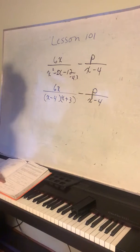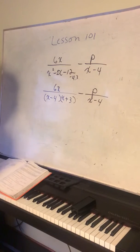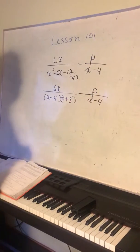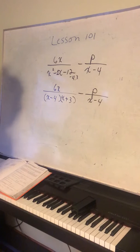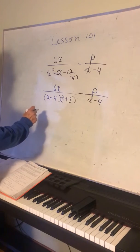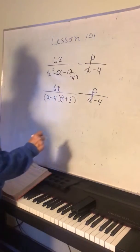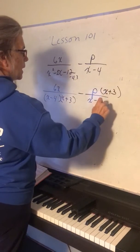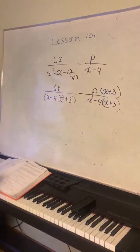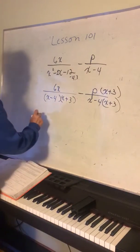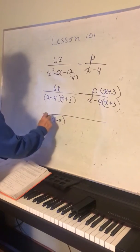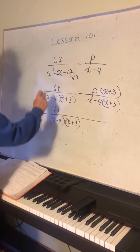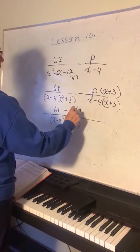We have x minus 4 times x plus 3, minus p over x minus 4. Now we need to get the denominators the same. This denominator already has x minus 4, but it needs the x plus 3 factor. So we multiply that term by (x plus 3) over (x plus 3), giving us x minus 4 times x plus 3 on the bottom for both.